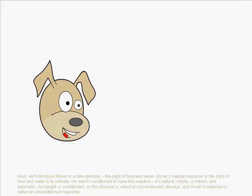Next, we'll introduce Rover to a new stimulus, the sight of food and water. Rover's natural response to the sight of food and water is to salivate. He wasn't conditioned to have this reaction. It's natural, innate, or inborn, and automatic, not taught, not conditioned. So this stimulus is called an unconditioned stimulus, and Rover's response is called an unconditioned response.